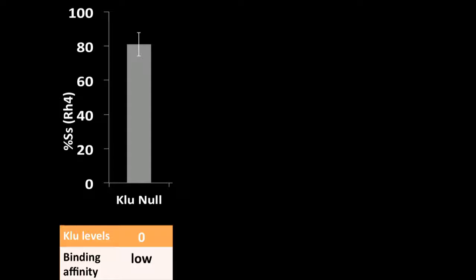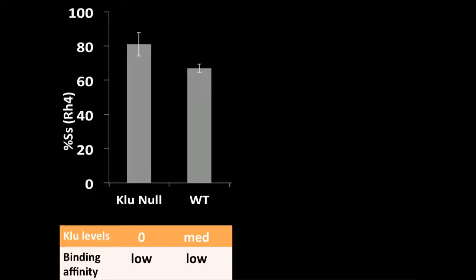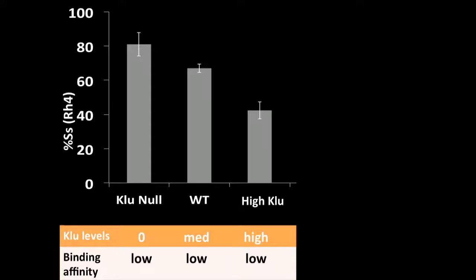Just to summarize what I've shown you so far, in a clue null situation, we have zero clue levels and low binding affinity. In a wild-type situation, we're now having endogenous levels of clue, and this causes a decrease from what we saw in the clue null. When we overexpress clue, we now have high clue but still low binding affinity, and so we see another decrease in the ratio of spineless on-to-off cells.